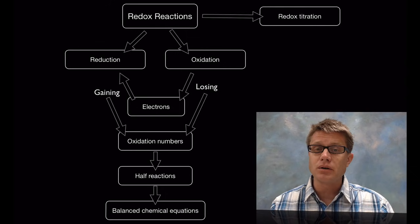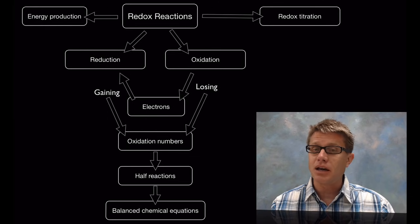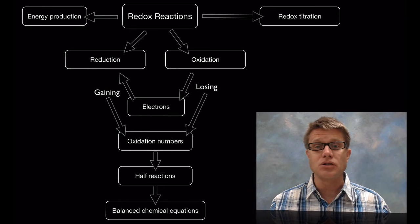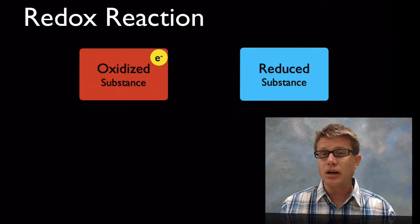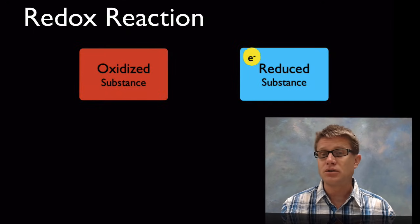These are important in the chemistry lab because we can use them as a different type of titration — a redox titration. These are really important because they allow us to produce energy: not only the energy that drives your car but the energy that drives you. In a redox reaction we're moving high energy electrons from the oxidized substance to the reduced substance.